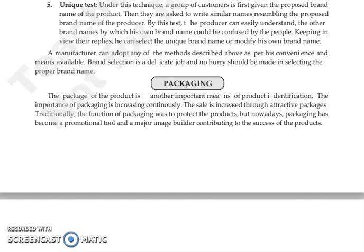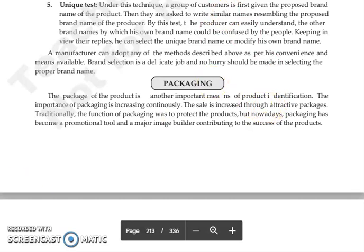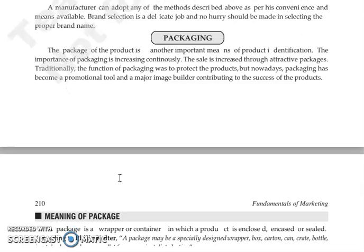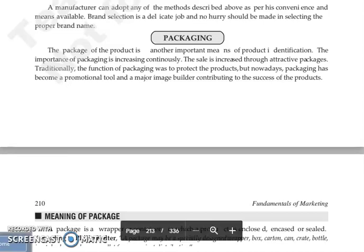Packaging is the process of taking decisions regarding a package. A package is a container — in any form — that provides protection to the product. Packaging is used to identify a product. For example, the shape of a Limca bottle is different, the shape of a Coca-Cola bottle is different, and the shape of a Fanta bottle is different. So just from the shape of the bottle you can identify which product it is. So the package is also an important tool for product identification.